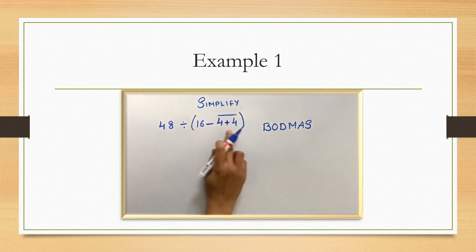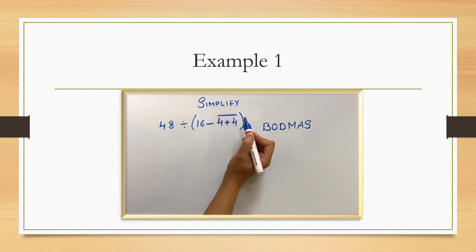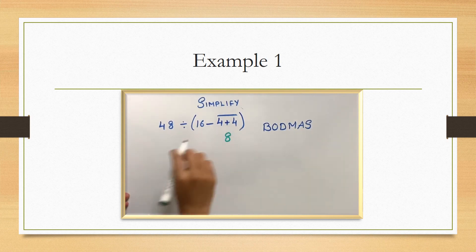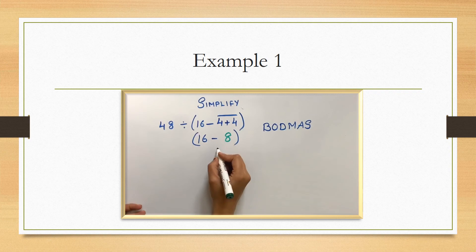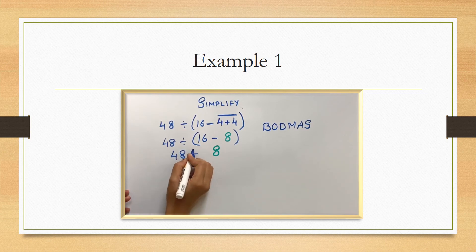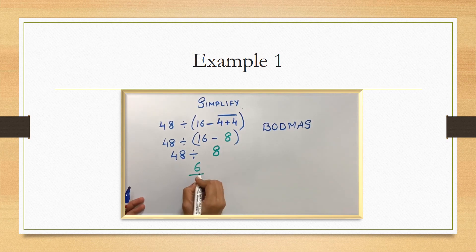Here you can see that there is a bracket and inside the bracket, this is line bracket. So first we have to do line bracket. 4 plus 4, which is 8. Next, again in the bracket, you have 16 minus 8. So first finish this bracket. 16 minus 8, it's again 8. Next, we have 48 divided by 8. So now it's division. 48 divided by 8 is 6. Answer is 6.